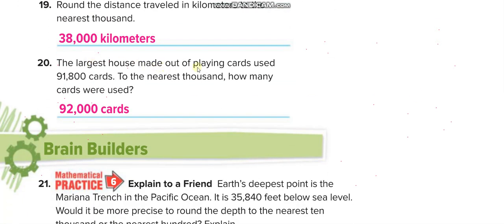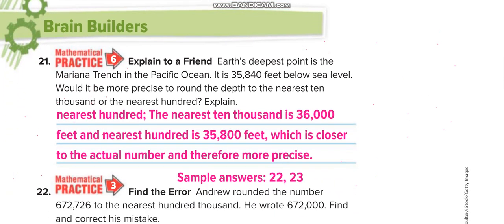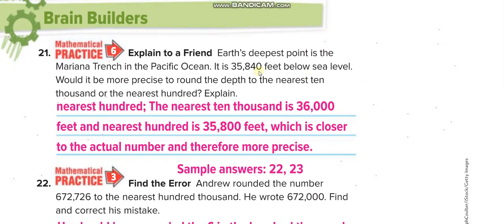Question 20: The largest house made out of playing cards used 91,800 cards. To the nearest thousand, how many cards were used? Ones, tens, hundreds, thousands — this is the thousands place. The next digit is 8, which is more than 5, so we add one. The answer is ninety-two thousand.